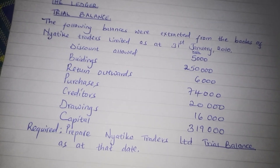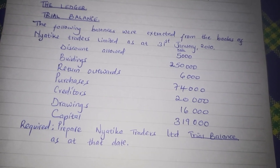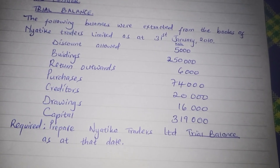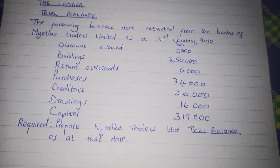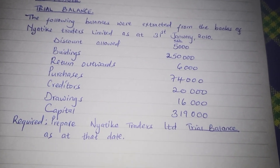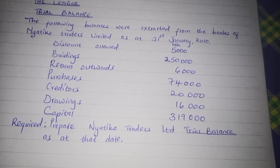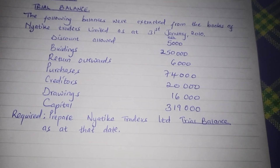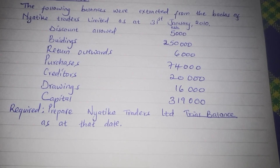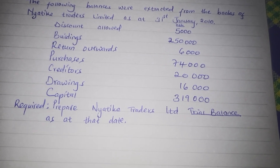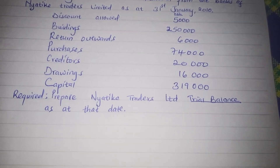A trial balance is usually prepared after preparing the ledger. So what you have here are the ledger balances. The question reads: the following balances were extracted from the books of Anyatike Traders Limited as at 31st January 2010. We have a discount allowed of $5,000, a building $250,000, return outwards $6,000, purchases $74,000, creditors $20,000, drawings $16,000, and capital $319,000.